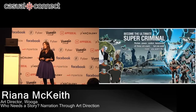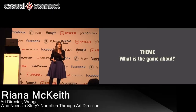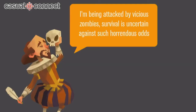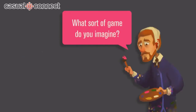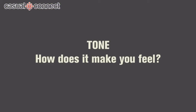Here are some of the other mood board ideas — these are some of my favourites. What you're getting to is the theme: what is the story about, what is this world about? But that's only half the conversation — that's not your story, that's just part of it, because something is missing. Think about this: I'm being attacked by vicious zombies, survival is uncertain against horrendous odds. Two games can share the same theme but look completely different because of the artwork and what I like to call the tone — how does the artwork make you feel?